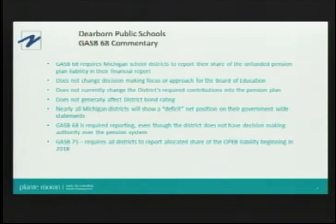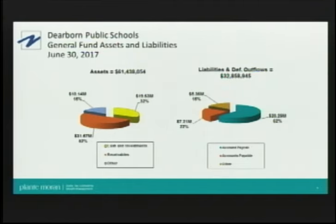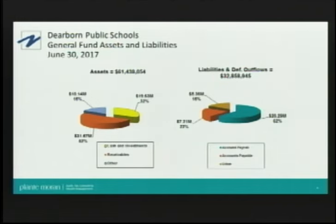While we are required to report that at the upper level, it's really at the fund level where financial management of the district occurs — where the Board monitors and where budgets are set. That's where we focus our presentation: the general fund. The general fund is the primary fund of the district, where the vast majority of activity occurs. As of June 30, 2017, there are assets of roughly $61 million and liabilities of approximately $32 million. The most significant asset is receivables — roughly $32 million, of which approximately $30 million is due from the state.